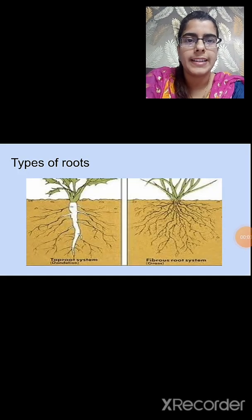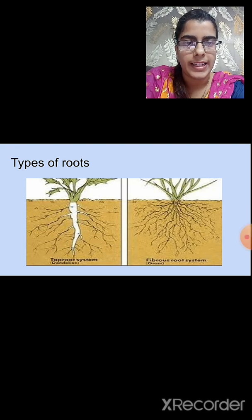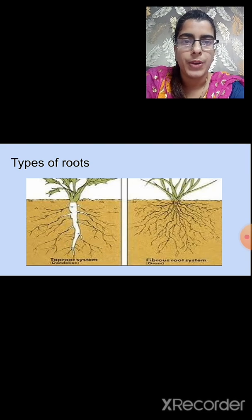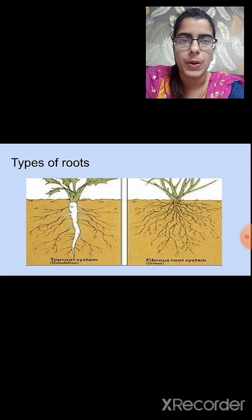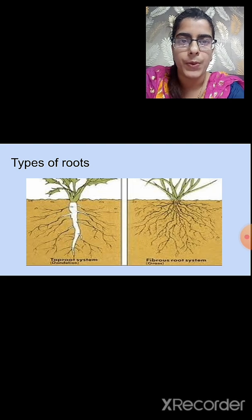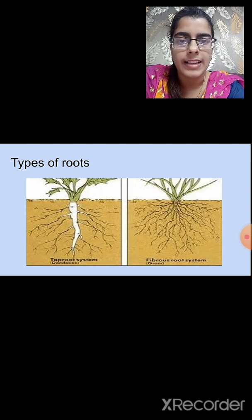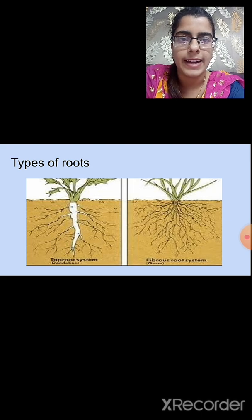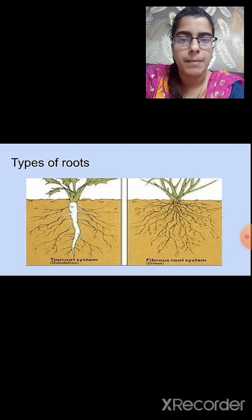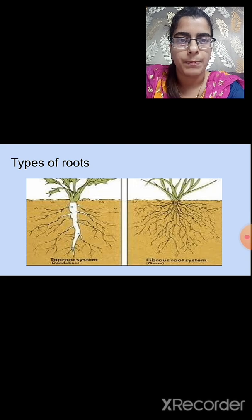Now we will revise the types of roots. There are two types: tap root and fibrous root. In tap root, there is a main root called the tap root, and small roots that arise from it are called lateral roots. Carrot, turnip, beetroot, parsley, and dandelion have the tap root system.